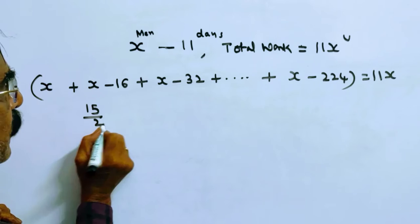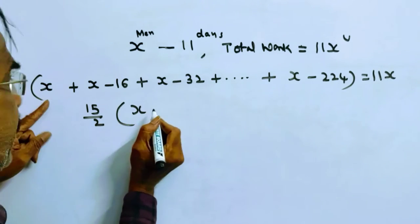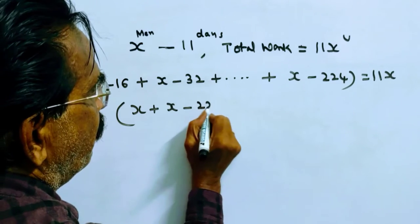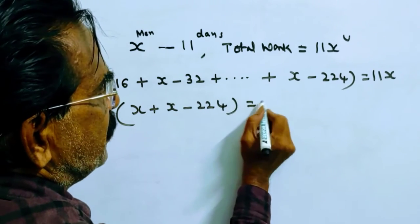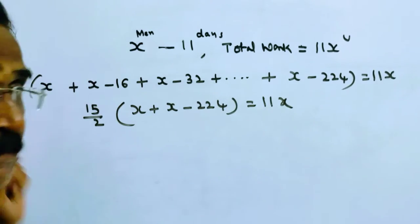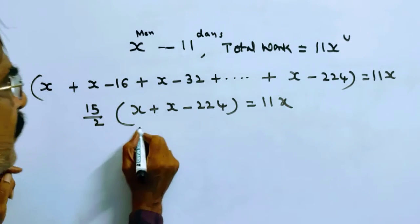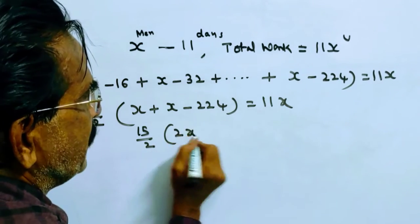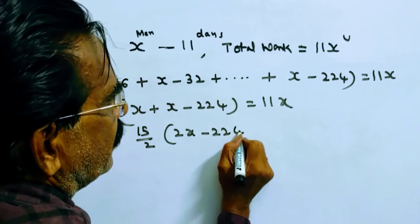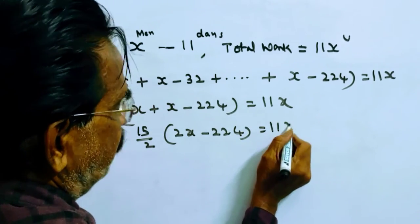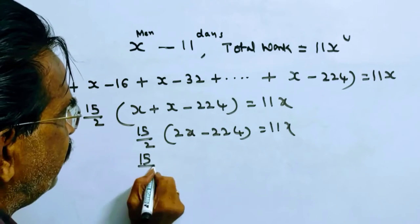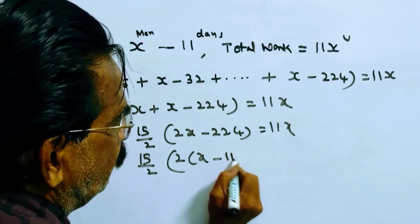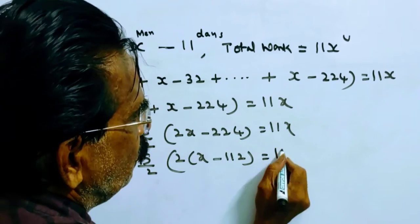N by 2 into A plus L. A is X, L is X minus 224. This is equal to 11X. This must be equal to total. So 15 by 2 into 2X minus 224 is equal to 11X.